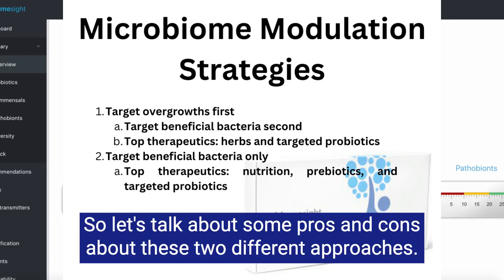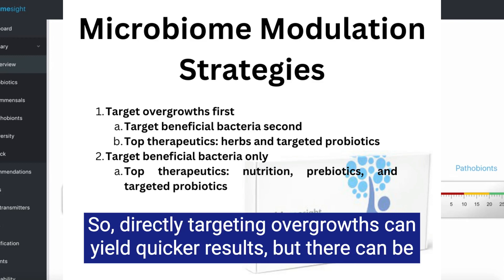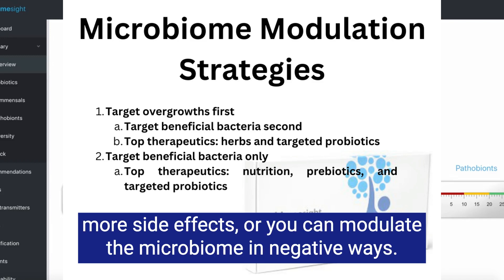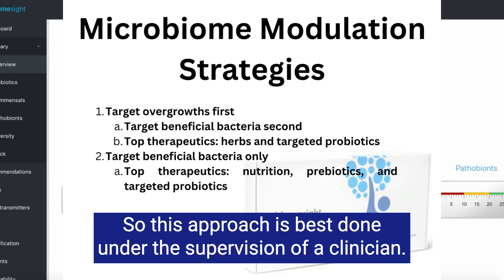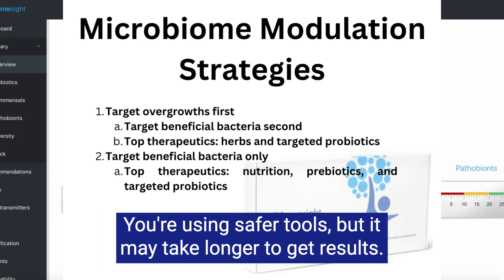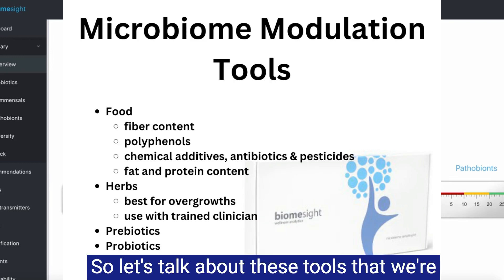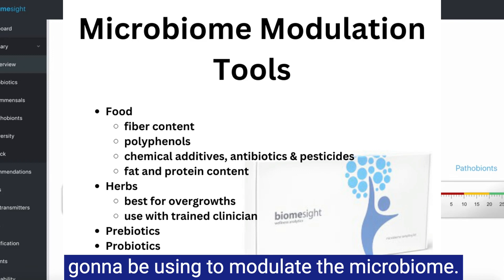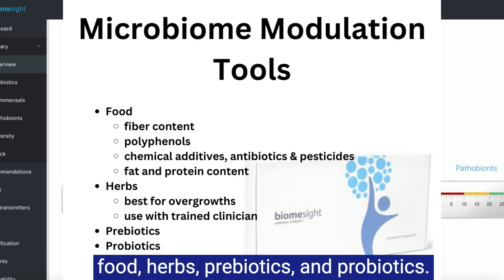Directly targeting overgrowth can yield quicker results, but there can be more side effects or you can modulate the microbiome in negative ways, so this approach is best done under the supervision of a clinician. Focusing on the beneficial species generally has fewer side effects and uses safer tools, but it may take longer to get results. The primary tools we'll be using to modulate the microbiome are food, herbs, prebiotics, and probiotics.